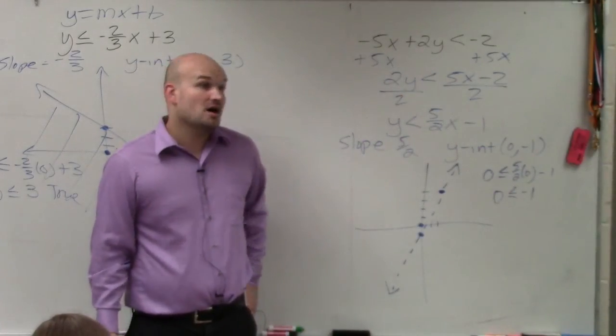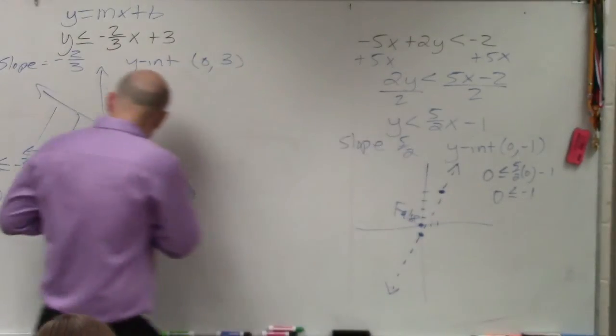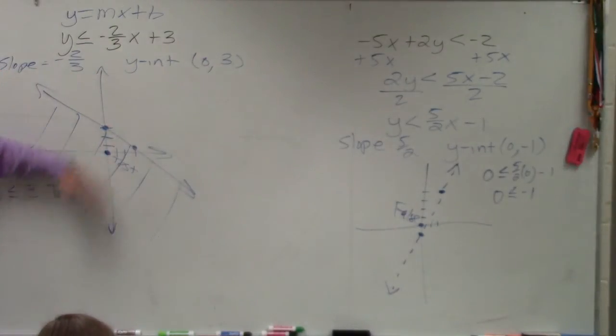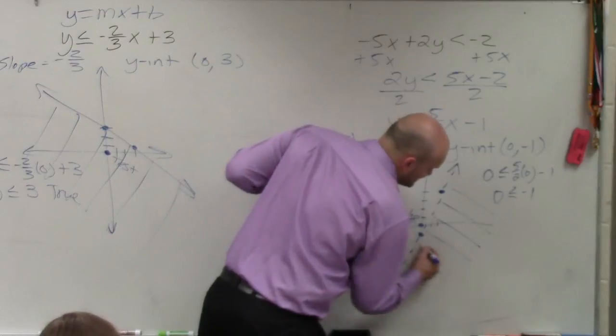Yes. No, it's not, right? So that is false. So when it was true, you shaded all the points that were towards the true point. When it's false, you shade all the points on the opposite side.